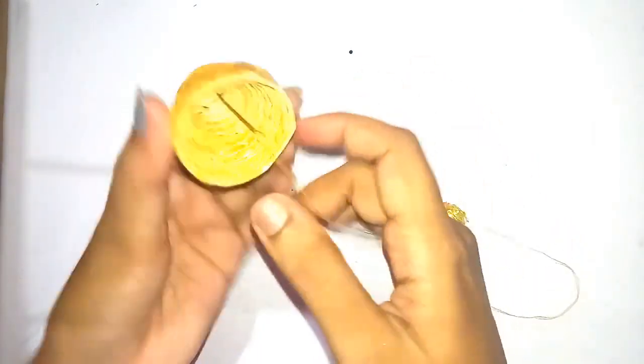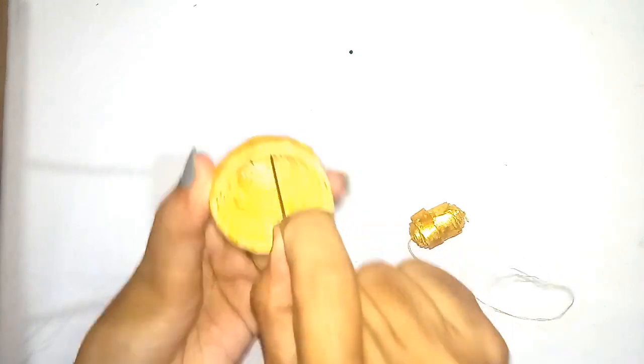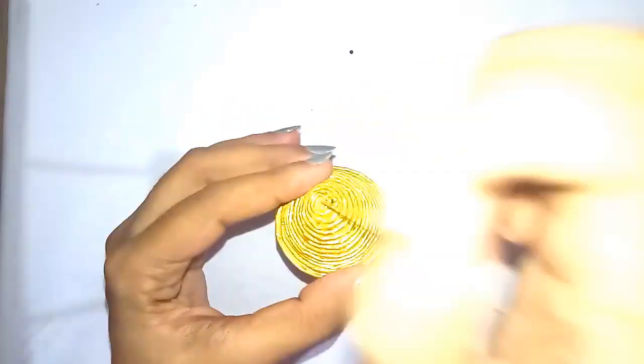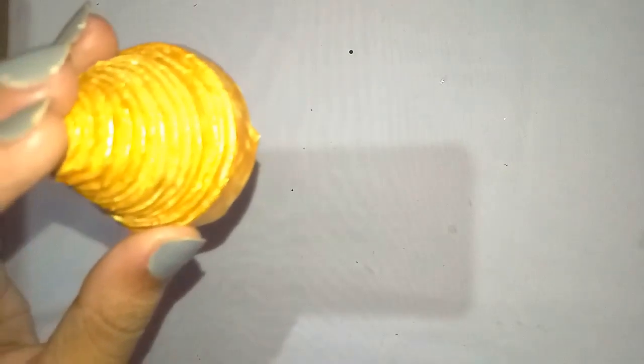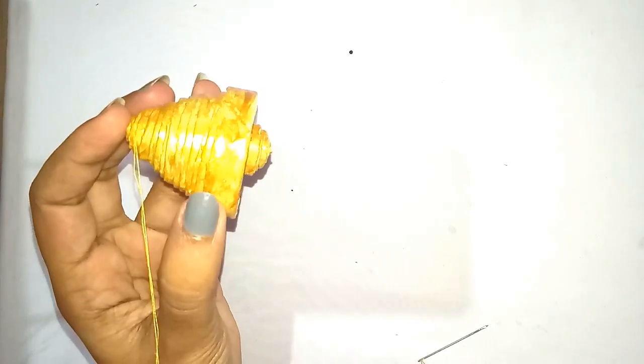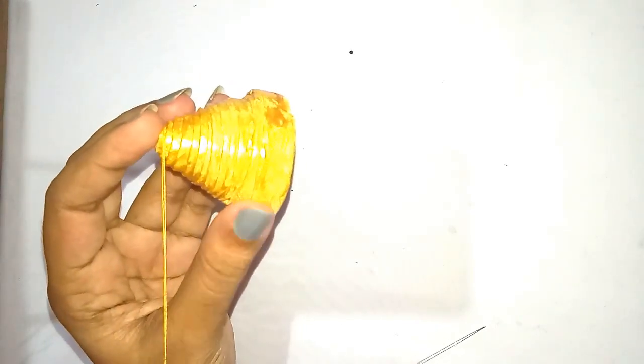Insert the needle through the center part of the other paper piece which you have made and kept. You should fix the center part of the bell like this. Again, keep the bell on the table and stick the thread using hot glue.